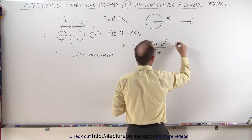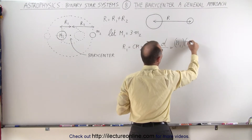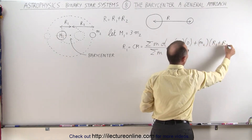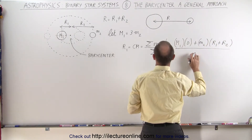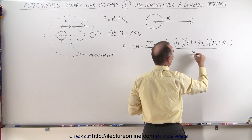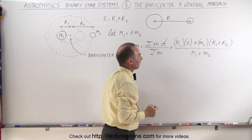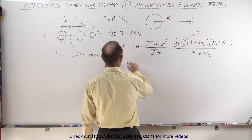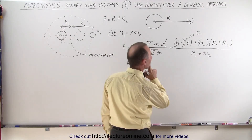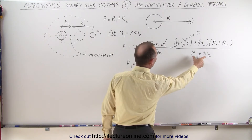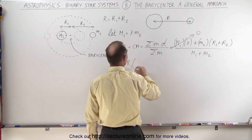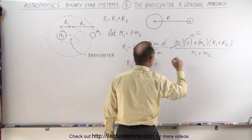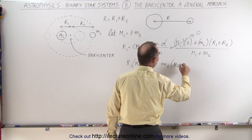So R1 is equal to M1 times 0 plus M2 times the sum R1 plus R2, divided by M1 plus M2. Since M1 times 0 is zero, we cross multiply to get R1 times (M1 plus M2) equals M2 times (R1 plus R2).